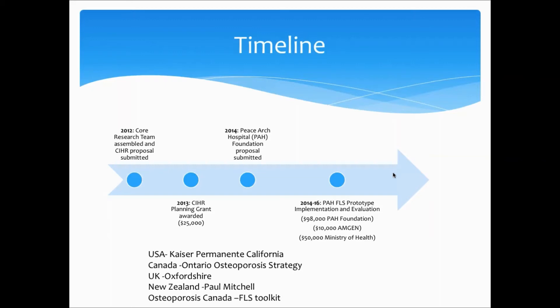We also tried to learn from others who had done similar things before us. We brought people from the Kaiser Permanente group in California, who already had a very well-established FLS, people from the Ontario Osteoporosis Strategy from Toronto, people from the UK where FLS first got launched, and also from New Zealand where an FLS is now being spread out across the entire country. Osteoporosis Canada provided us with a lot of support, and in 2013 they came up with their FLS toolkit, which is now available for anybody to use on the Osteoporosis Canada website.